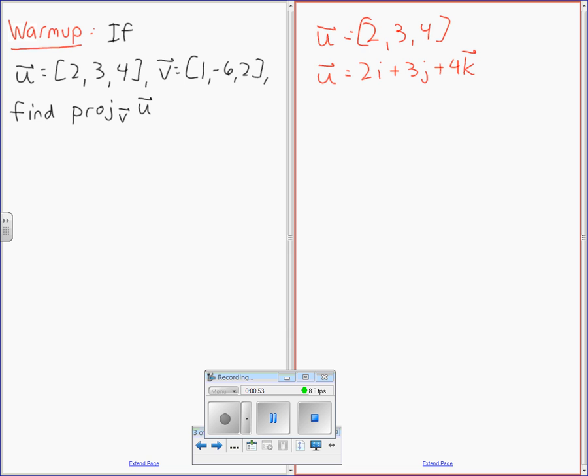Now, for those people that said I don't know what I, J, and K means, what does 2I mean? What does I mean? So this is going to be 2 times (1,0,0) plus 3 times (0,1,0) plus 4 times (0,0,1).